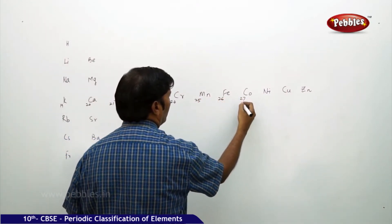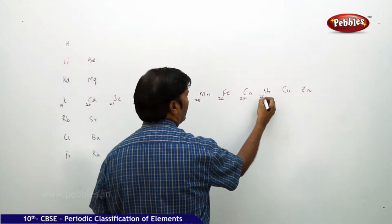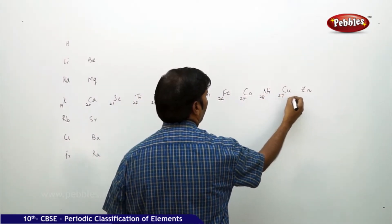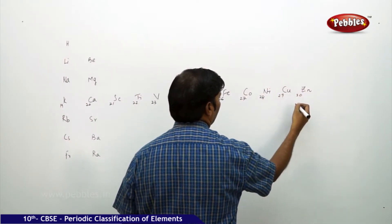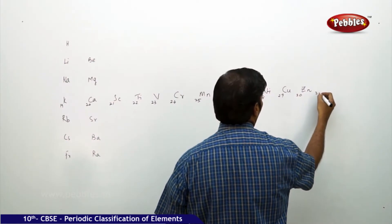26 Iron, 27 Cobalt, 28 Nickel, 29 Copper, 30 Zinc, 31 is Gallium.